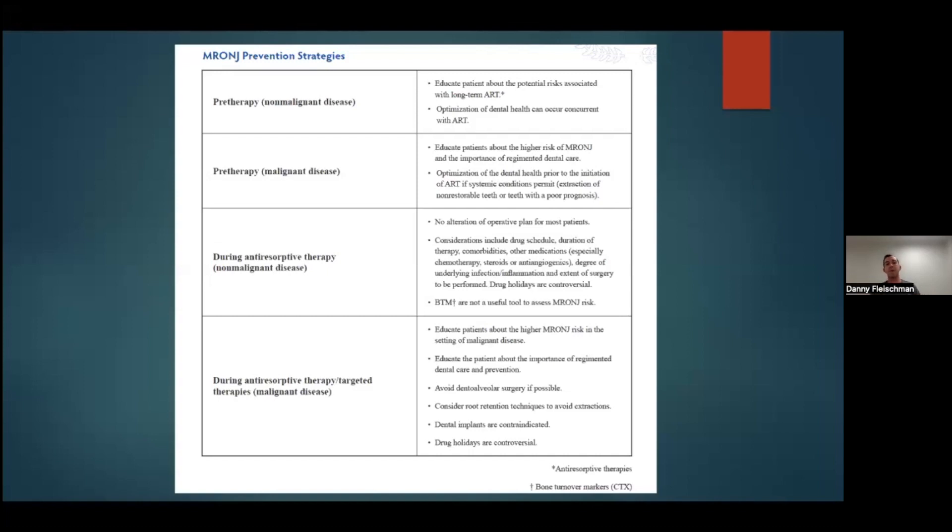With patients with malignant disease, you really want to avoid surgery if possible. You want to try to maybe do root canals on non-restorable teeth and bury the roots in place. And in these patients, dental implants are absolutely contraindicated, while they can be placed in patients on anti-resorptive medications for osteoporosis.